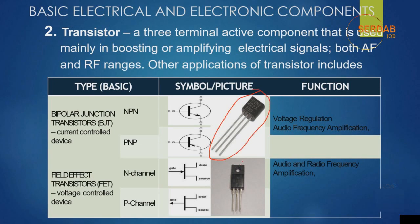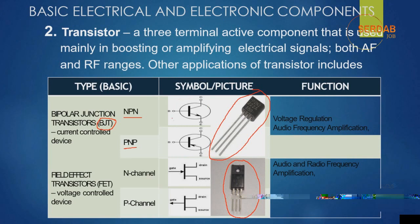High-power, high-current, and high-voltage transistors come in a larger shape. The first type is called a BJT, or bipolar junction transistor. It is a current-control device and comes in NPN or PNP types. Its main functions are voltage regulation and audio frequency amplification. This is the symbol for that type of transistor along with its physical layout.